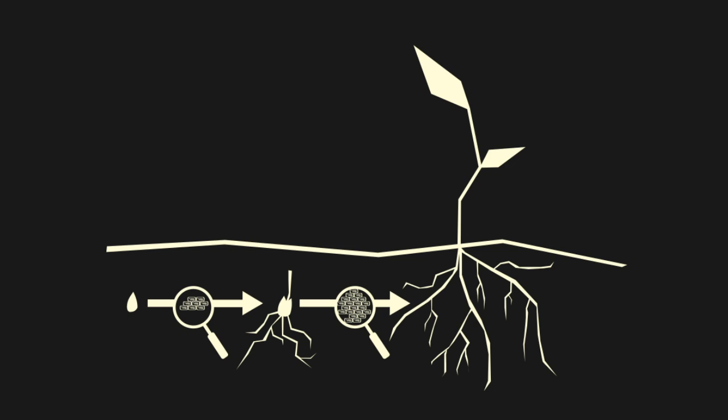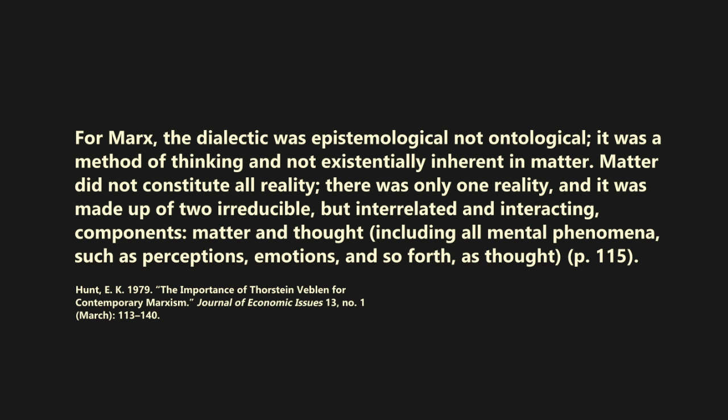Economic historian E.K. Hunt traces the roots of the dialectic as the basis of Marxist ontology, demonstrating that it was Engels and later contributors who gave dialectical materialism a type of primacy that it had not received with Marx. For Marx, the dialectic was epistemological, not ontological. It was a method of thinking, and not existentially inherent in matter. Matter did not constitute all reality.